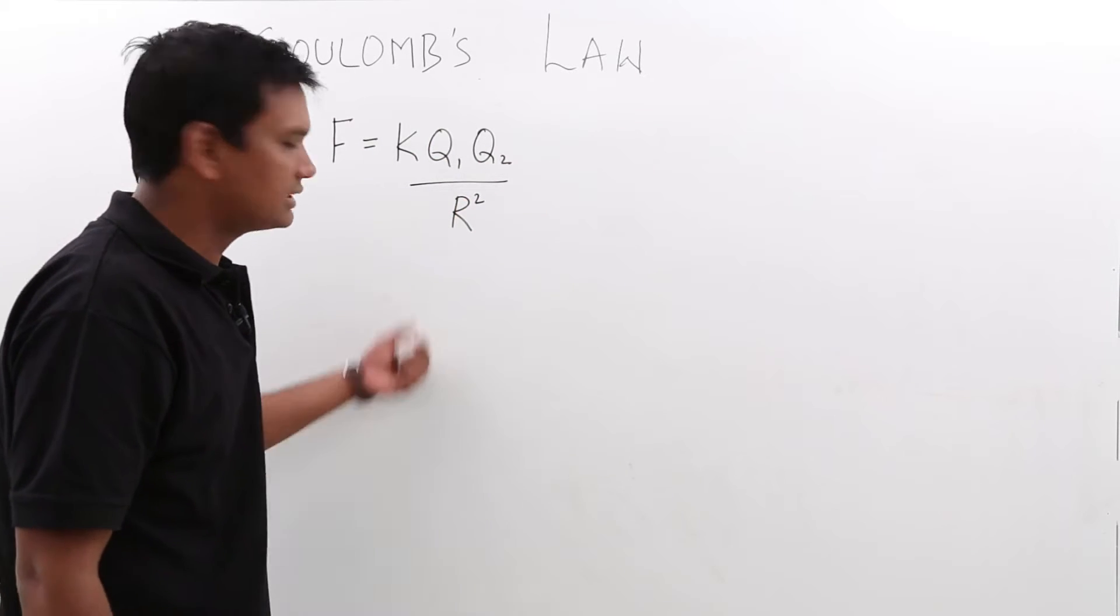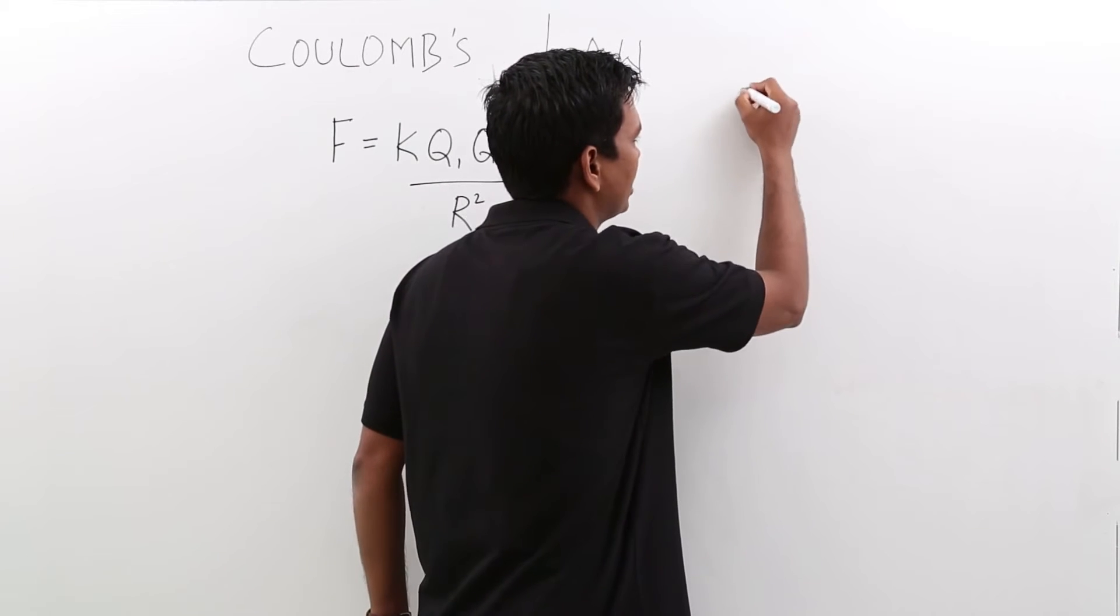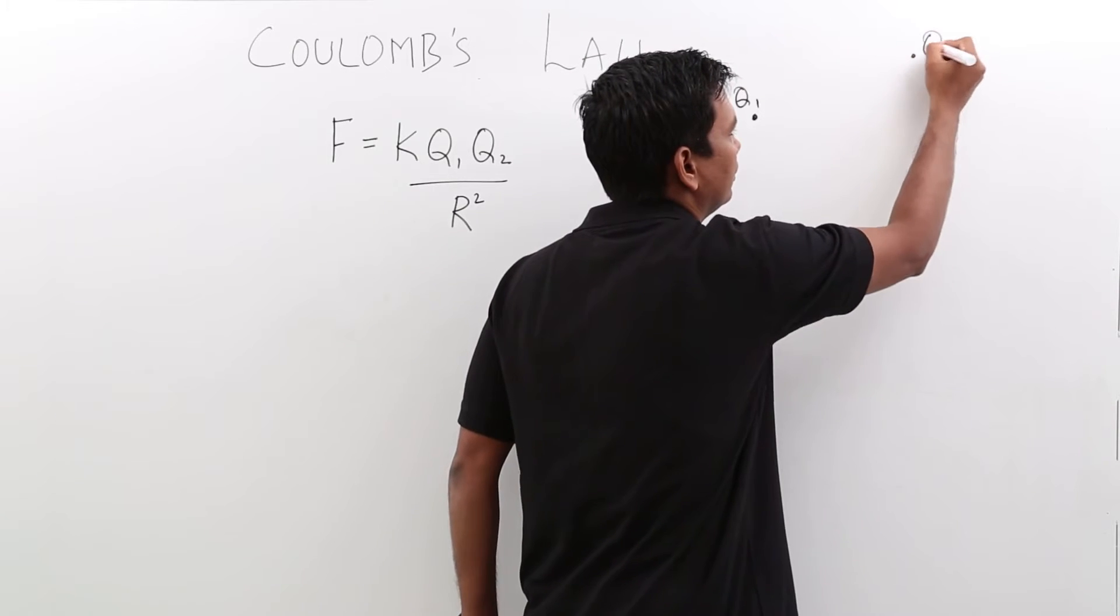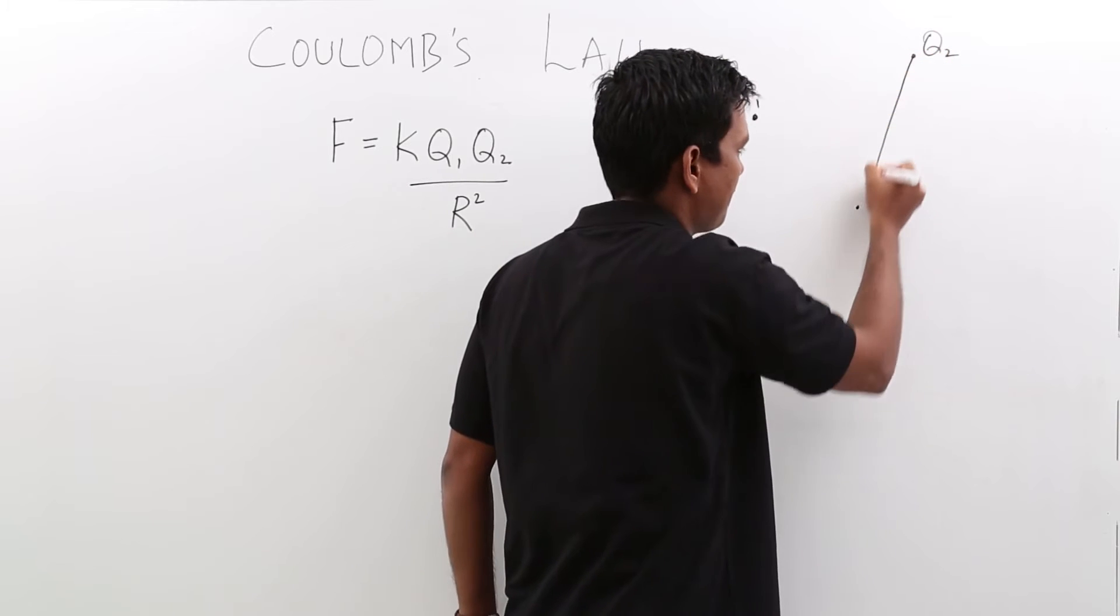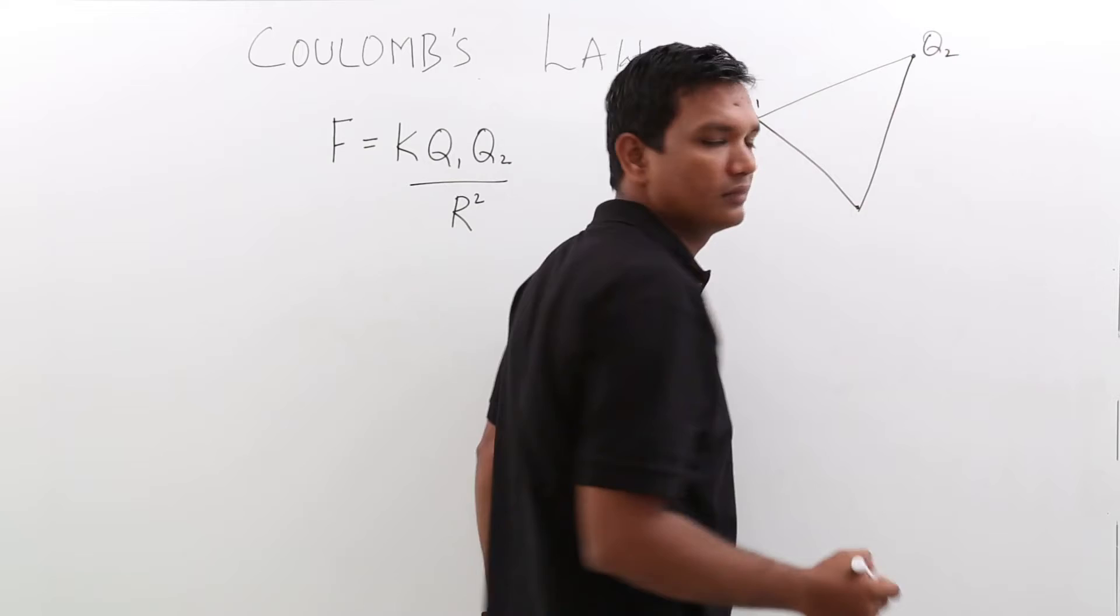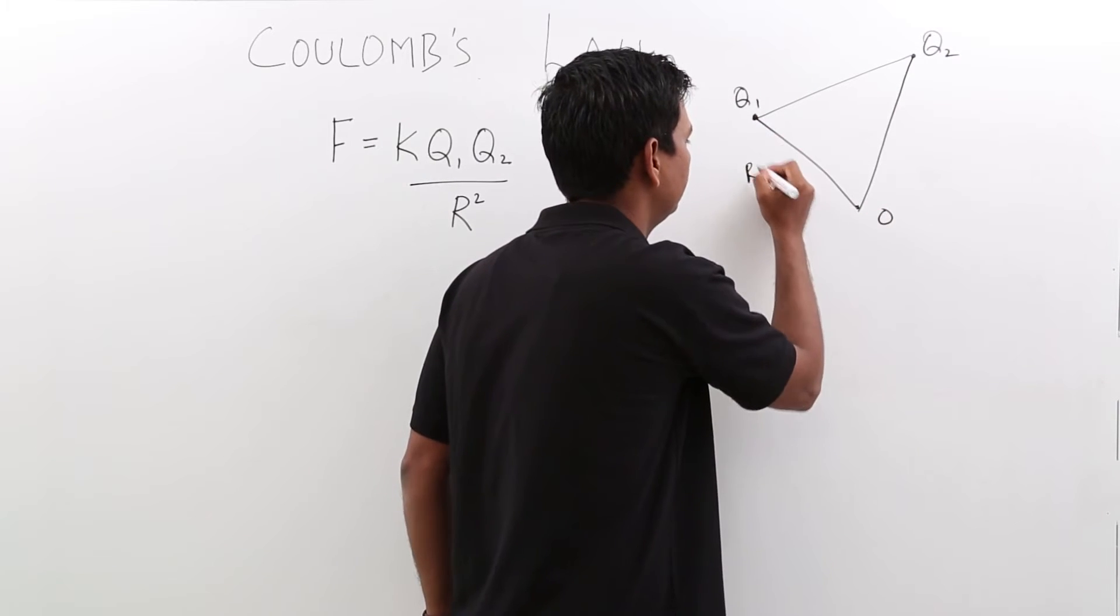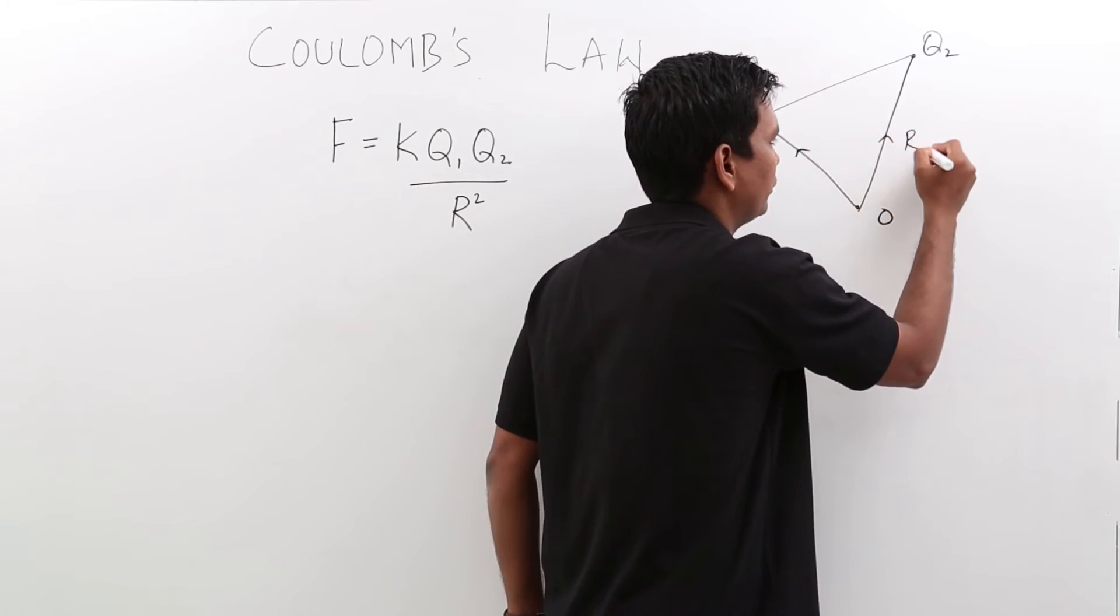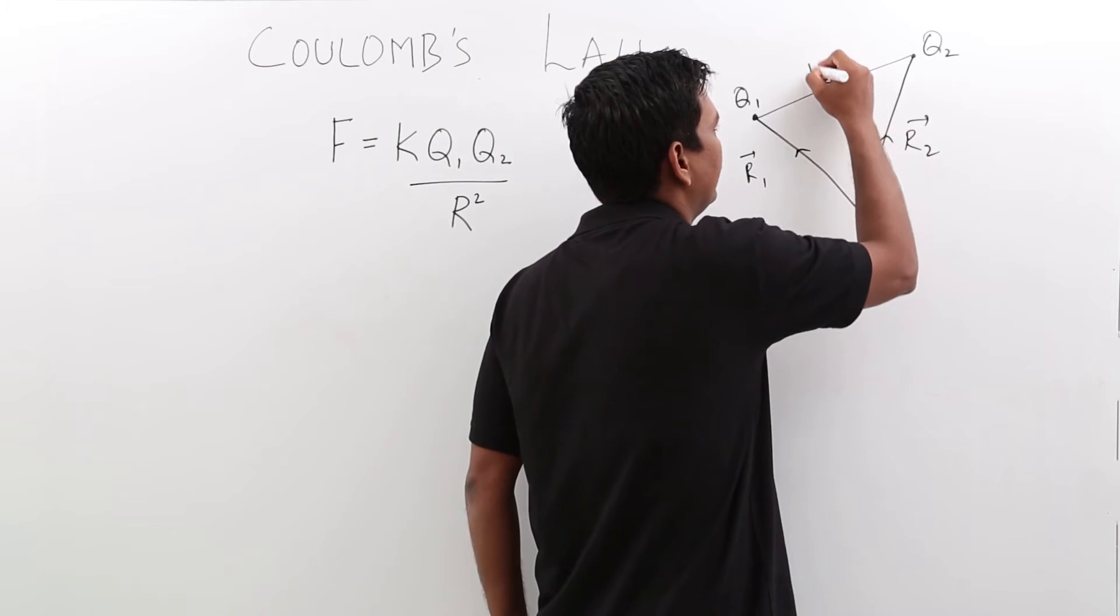Now let us understand this. Suppose I have a charge q1, another charge q2. Let us say this is an origin. Let me call this as an r1 vector, let me call this as an r2 vector. Let me call this as an r vector.